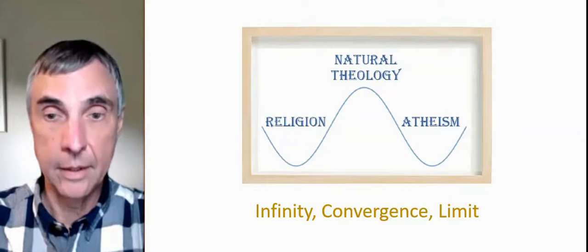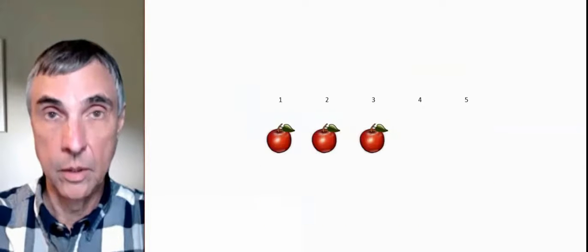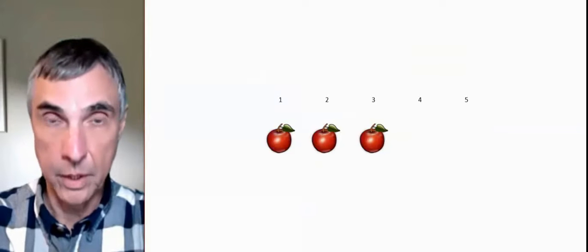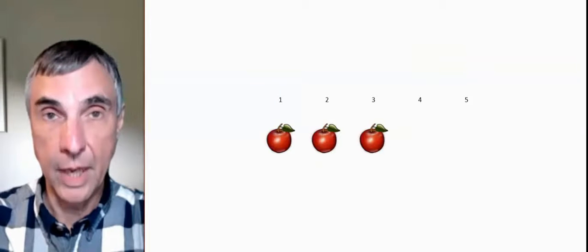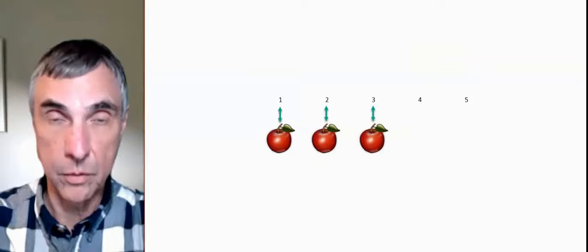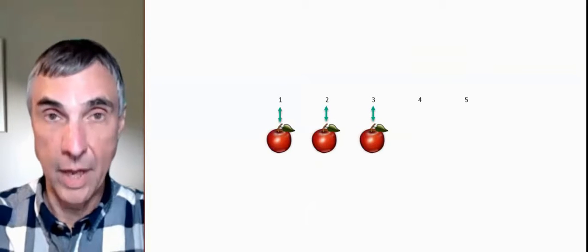Let's begin with the idea of counting. Let's suppose we have three apples. Now, what do we mean by that? Well, we write the numbers 1, 2, 3, 4, 5, 6, however many we need, and then we pair off the apples. One apple goes at the number 1, one apple goes at the number 2, one apple goes at the number 3. We run out of apples, and we're at the number 3, so there's three apples.